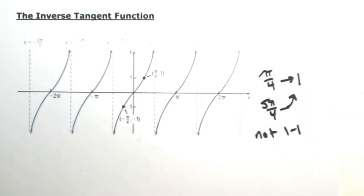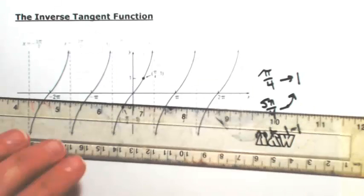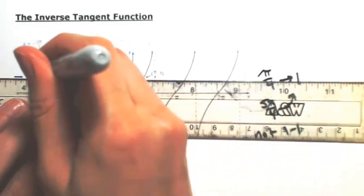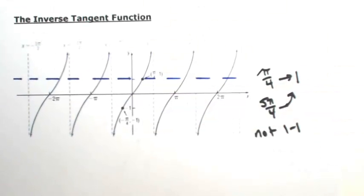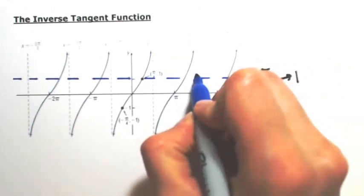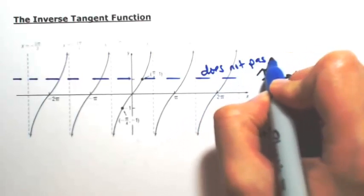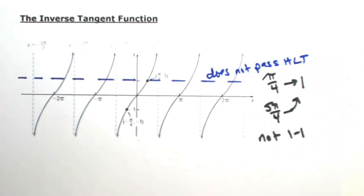Because this is not 1-to-1, it does not have an inverse. We can also see this by doing the horizontal line test. If I go through the y-value of 1, you'll see that it crosses through the tangent function infinitely many times. Because it crosses more than once, it does not pass the horizontal line test — which means it's not 1-to-1, and because it's not 1-to-1, it does not have an inverse.